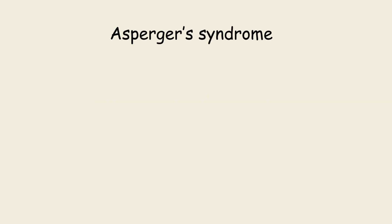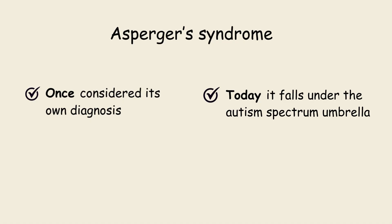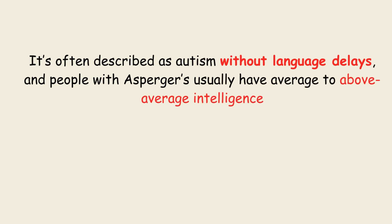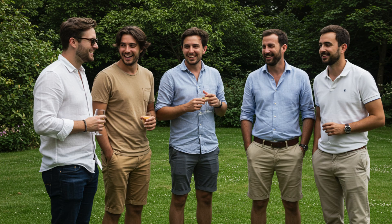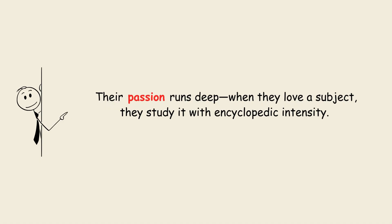Asperger's Syndrome was once considered its own diagnosis, but today it falls under the autism spectrum umbrella. It's often described as autism without language delays, and people with Asperger's usually have average to above-average intelligence. Imagine walking into a party — while everyone else is chatting about the weather or weekend plans, someone with Asperger's might head straight to the corner and dive into a detailed explanation of black holes, the history of trains, or the inner workings of jet engines. Their passion runs deep.